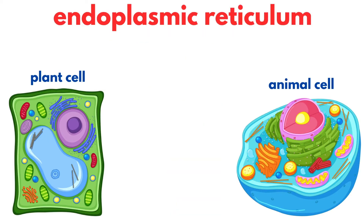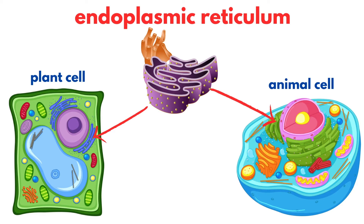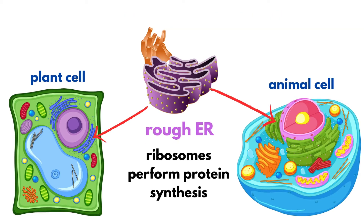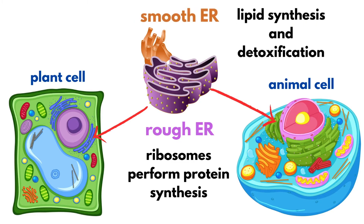Let's move on to the endoplasmic reticulum, or ER for short. The ER comes in two forms: rough and smooth. The rough ER is studded with ribosomes, giving it a bumpy appearance, and is primarily involved in protein synthesis. The smooth ER, on the other hand, lacks ribosomes and is key in lipid synthesis and detoxification processes. Both types of ER are present in plant and animal cells.